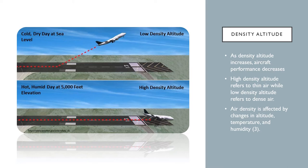As temperature increases, air expands and there's less bite that a propeller blade has to grab onto the air — it's the same for airplanes. Looking at this picture: the top shows a cold dry day at sea level — low density altitude — and the airplane takes off at a shorter runway distance. The bottom shows a hot humid day at 5,000 feet with increased density altitude; the pilot didn't compensate, ran out of runway before reaching takeoff speed. This is a very important concept because it determines how your aircraft operates under various conditions.